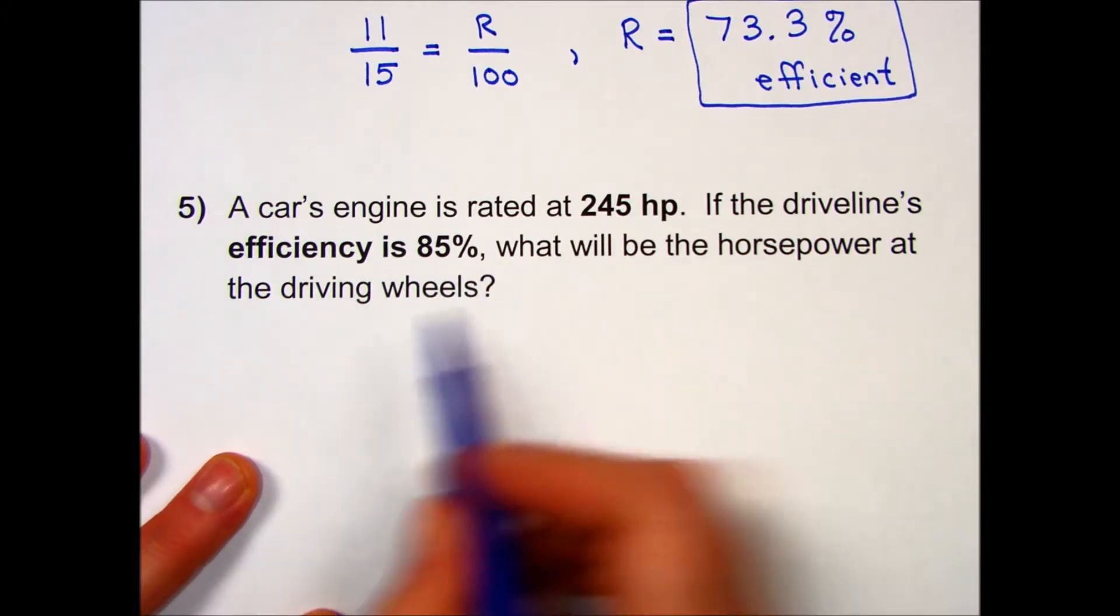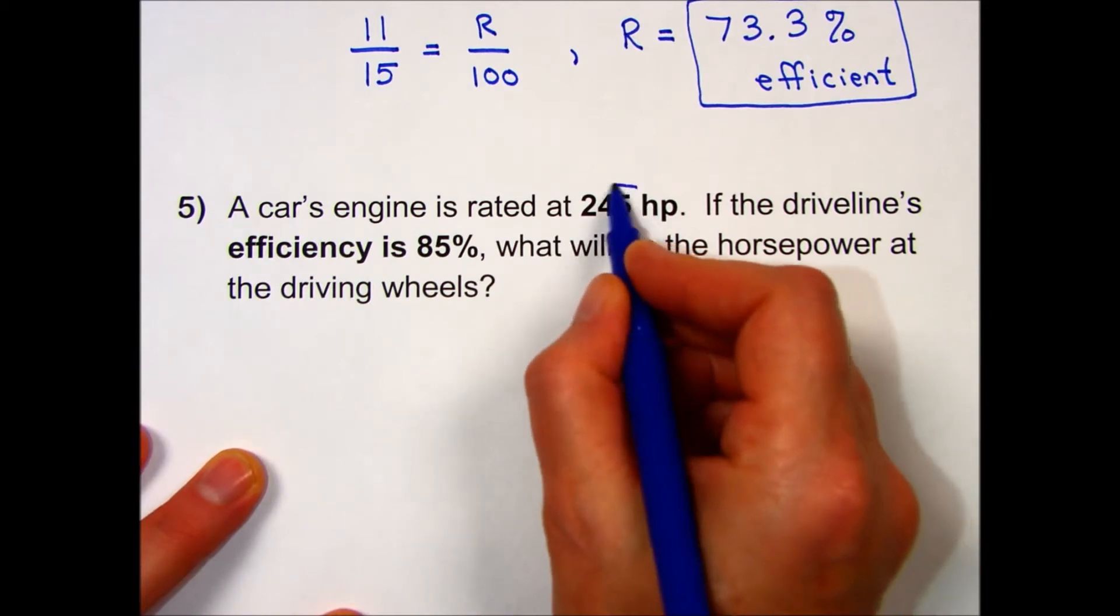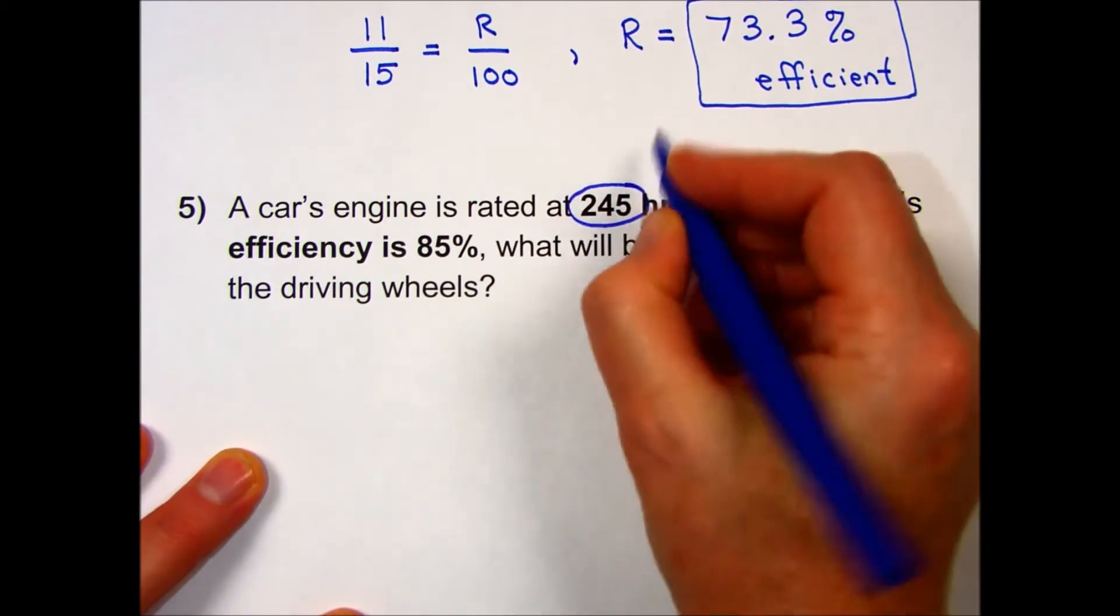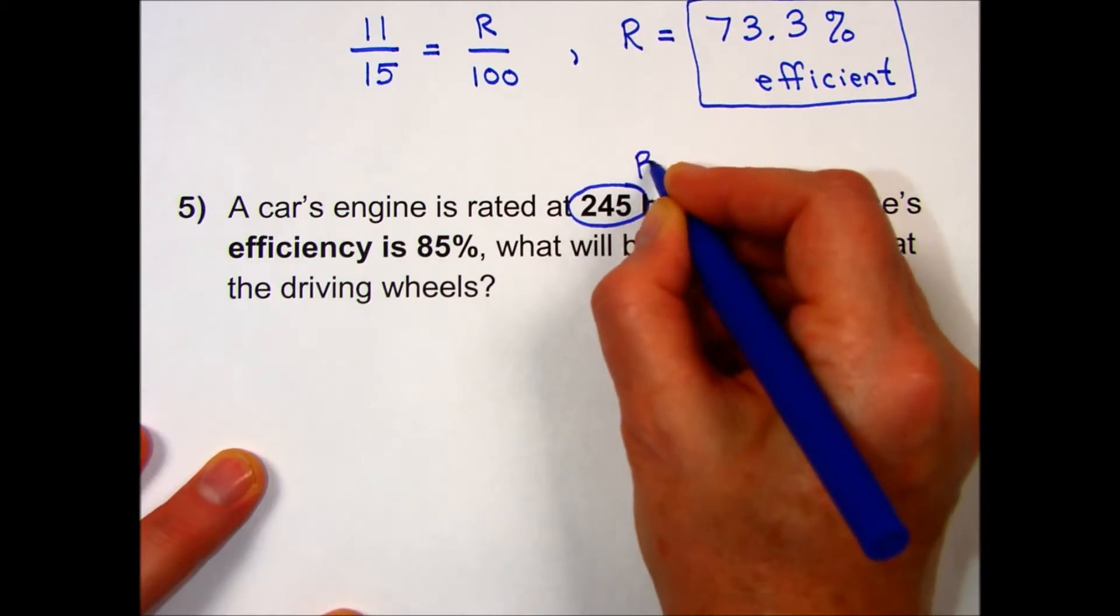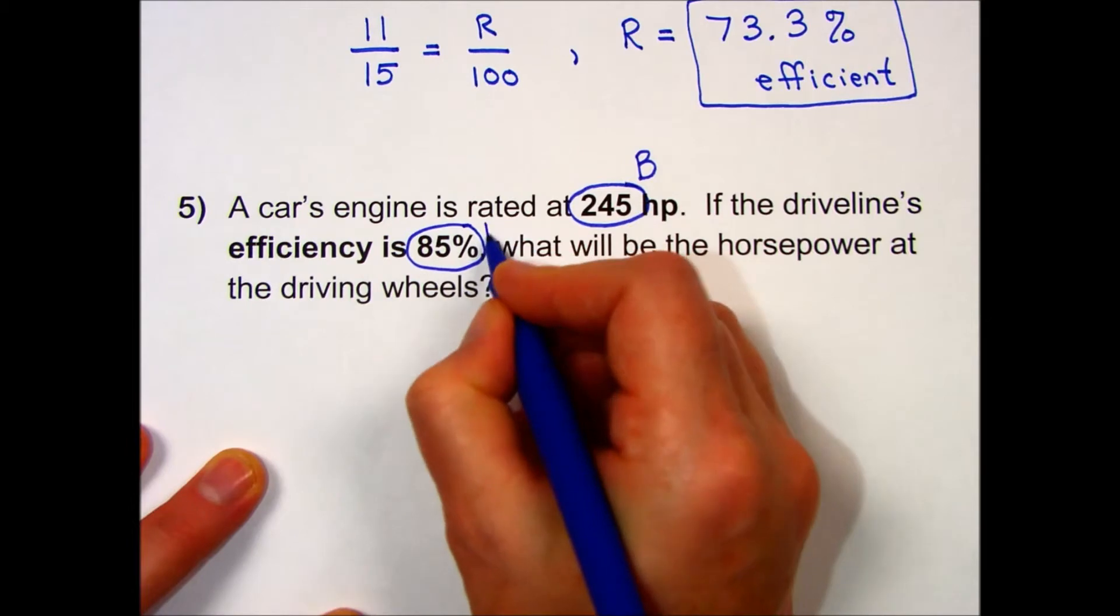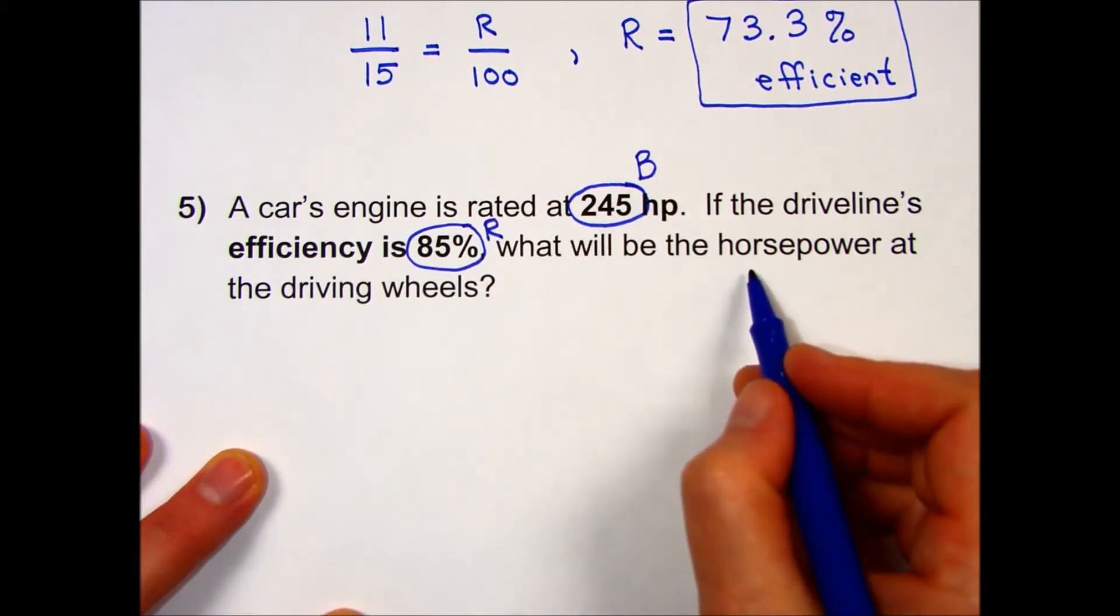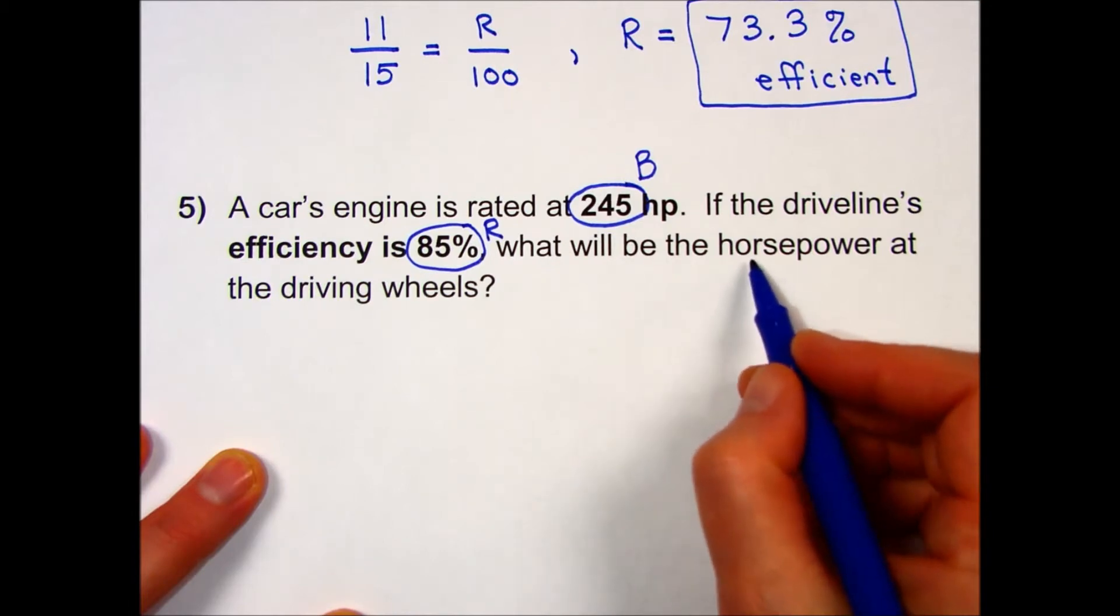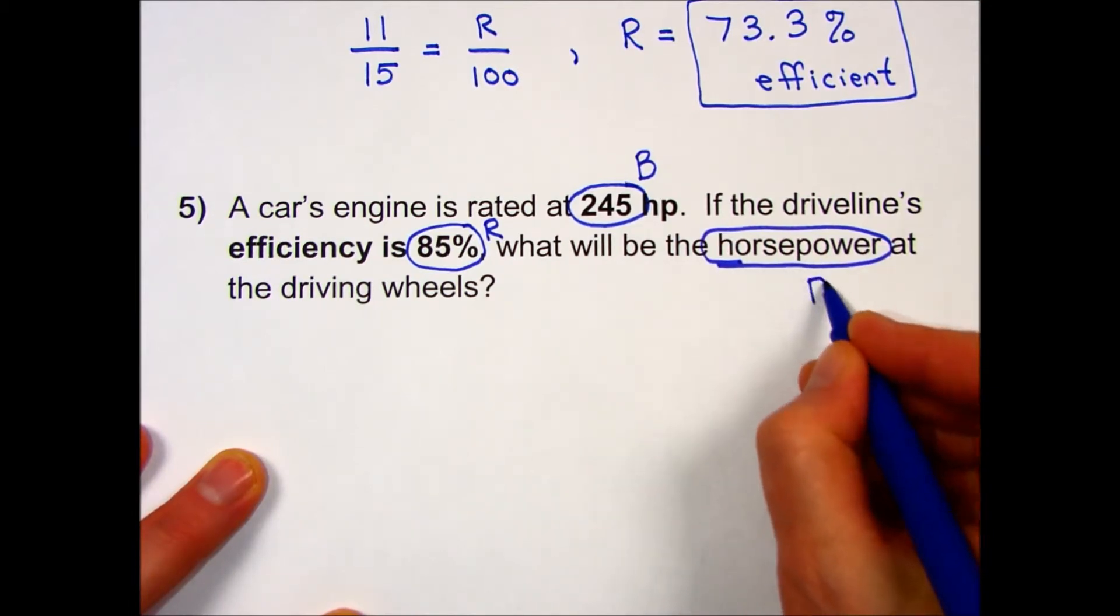The base is our 245 horsepower from the engine, and we are given the rate in this case, the efficiency of 85 percent. What will be the horsepower at the driving wheels? That's going to be our part.